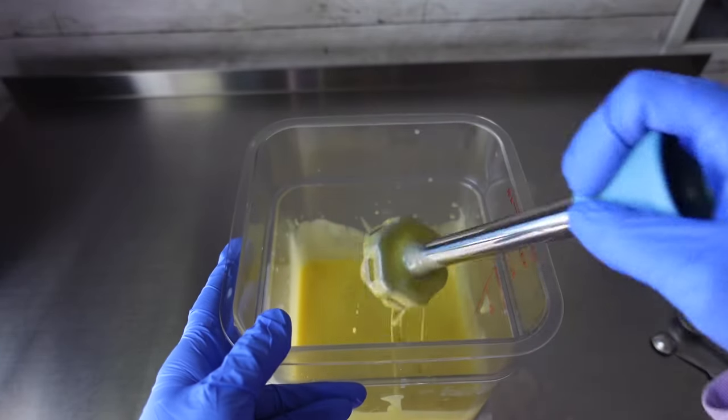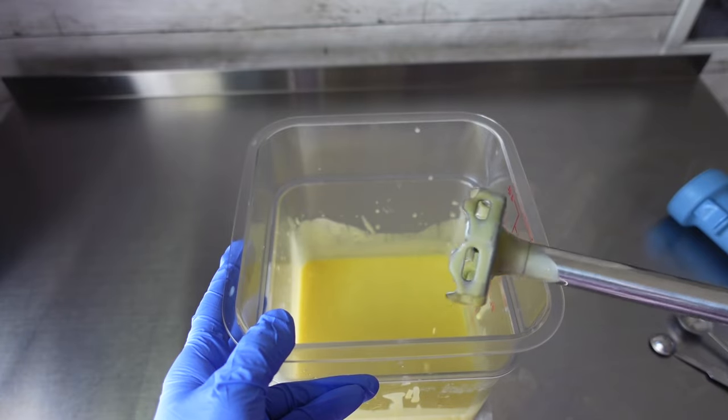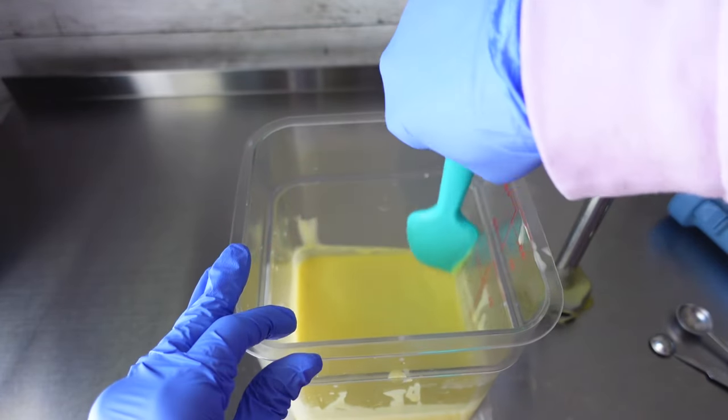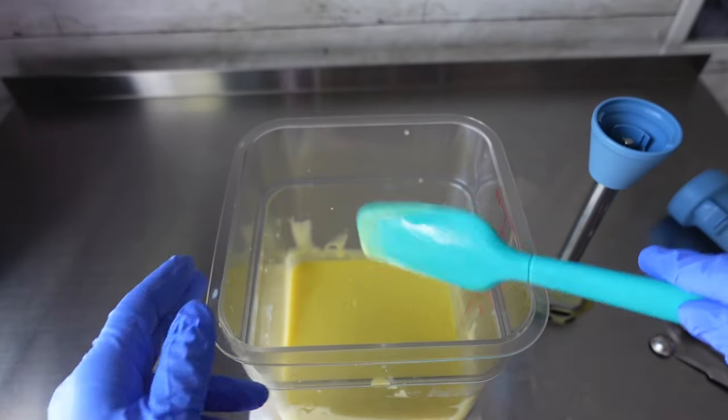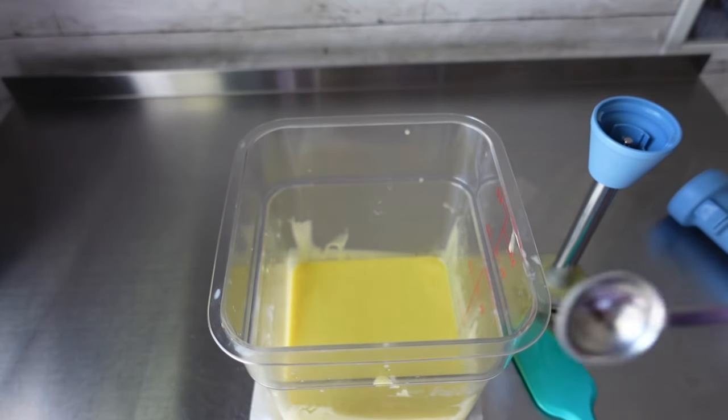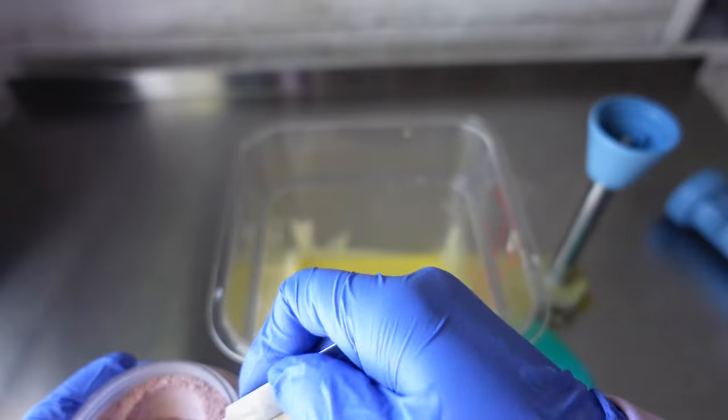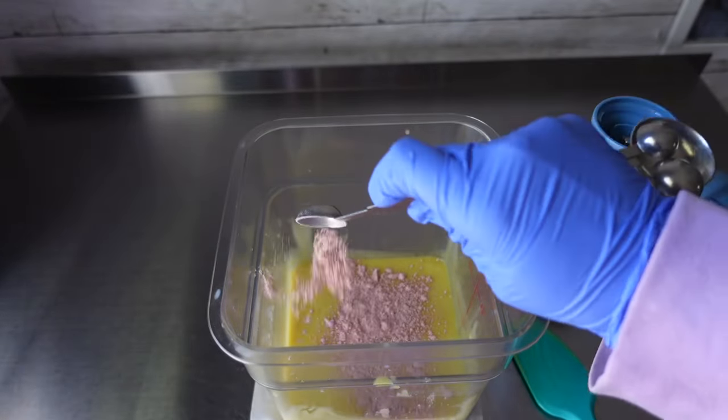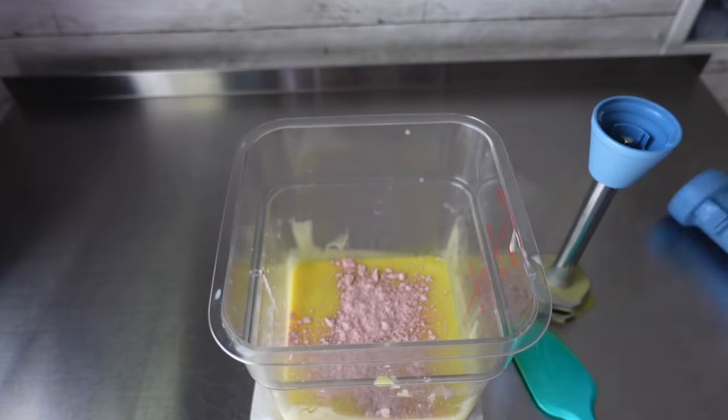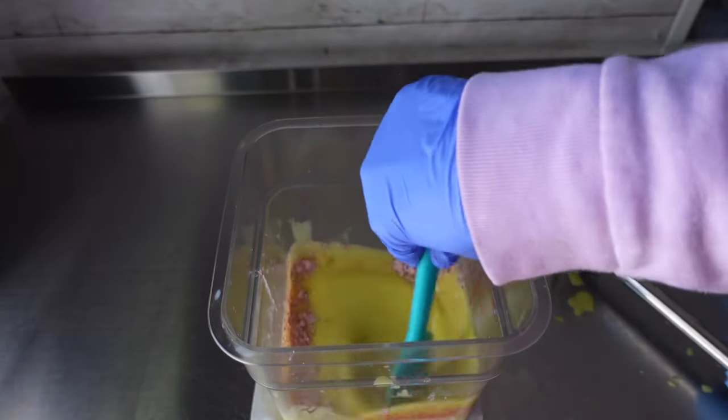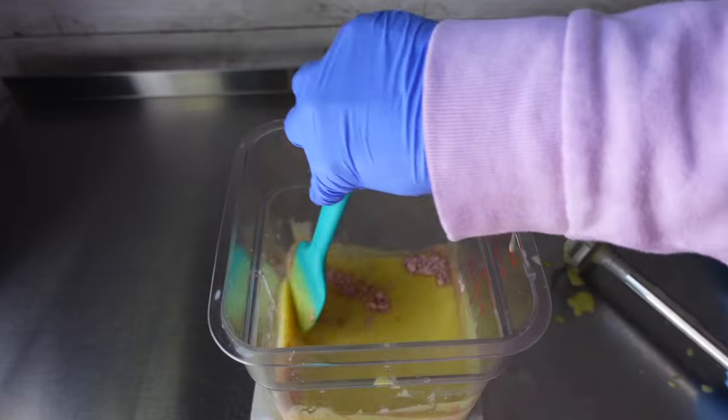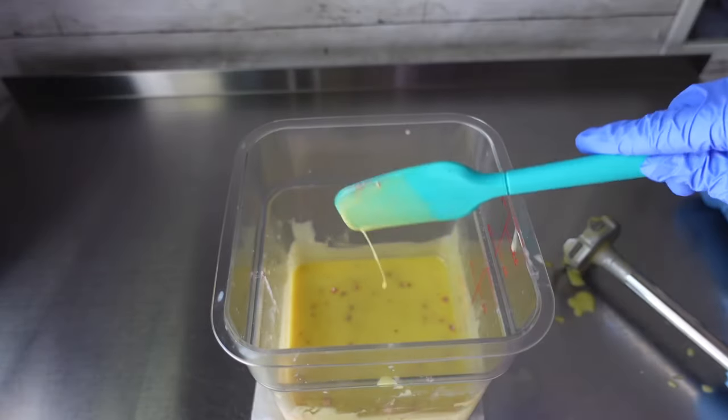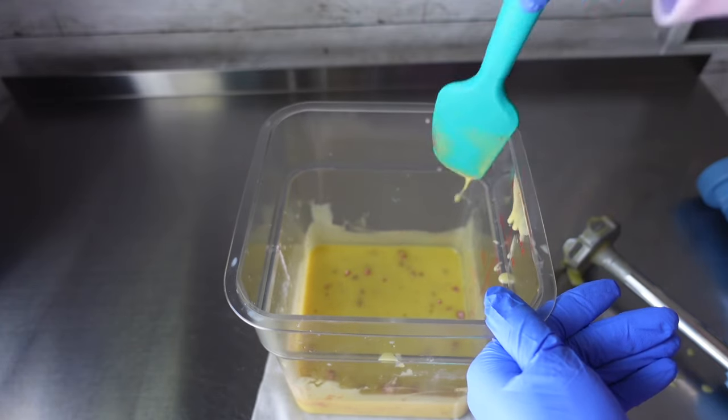Alright, so once I reached a very light trace, it was then time for me to add in my French pink clay. Now, for this soap, I did not add in any essential oil. So, the only additives for this soap would be just my French pink clay and the pink Himalayan salt. Right here, I just went in with one teaspoon of clay, one teaspoon per pound of oils. This soap, my oils was just 16 ounces, so I went in with one teaspoon of clay.